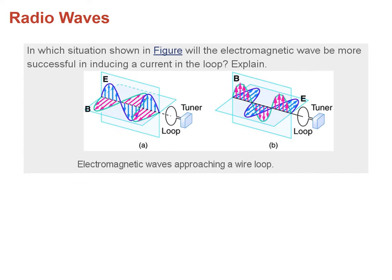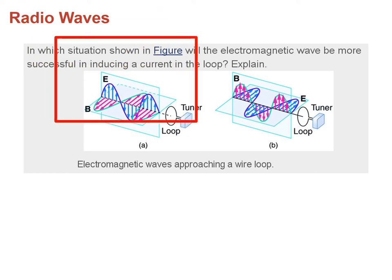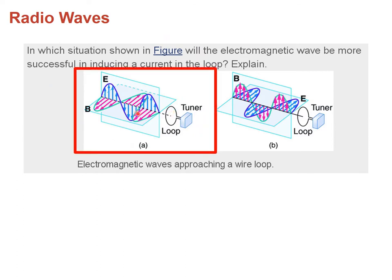For a loop antenna, consider two cases: one where the loop is oriented in the plane of the electric field with the magnetic field transverse to the loop, and another where the magnetic field is up and down and in the same plane as the loop. The arrangement that picks up a signal through the magnetic field is the first one, because the magnetic field needs to penetrate the loop. If the field is up and down and parallel to the loop, it will not produce any changing flux and will not induce a current.